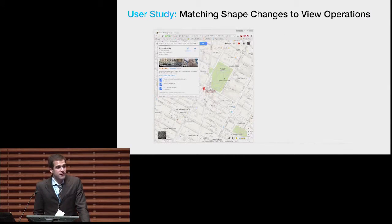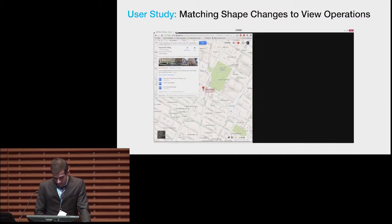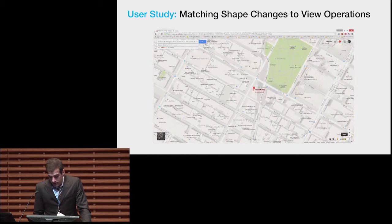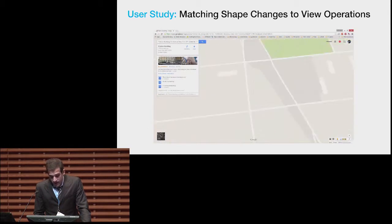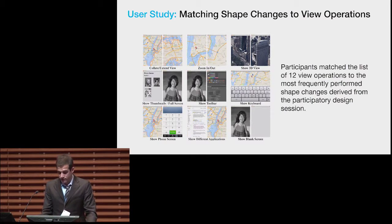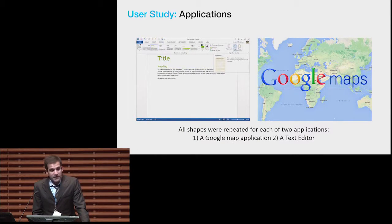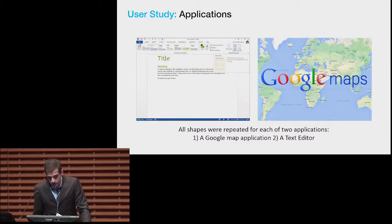In a subsequent user study, we asked participants to rank each of the 12 view operations derived from the participatory design session. Increasing the size of the window and revealing more of a map demonstrates a collated view. Zooming can be demonstrated by zooming in and out of a map without changing the window size. 3D views can be demonstrated by displaying graphics in a non-flat configuration. Additional operations included showing a keyboard, a toolbar, a phone keypad, distinct applications in each display, or an empty window. All shapes were repeated for each of two scenarios: a text editor and a Google Map application.